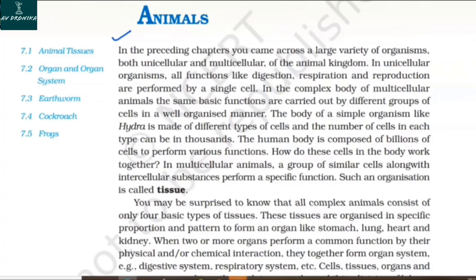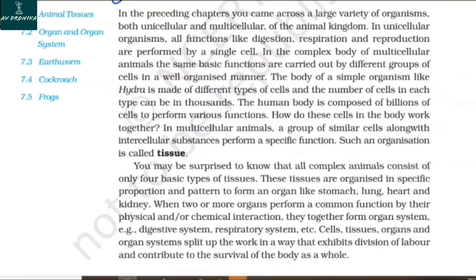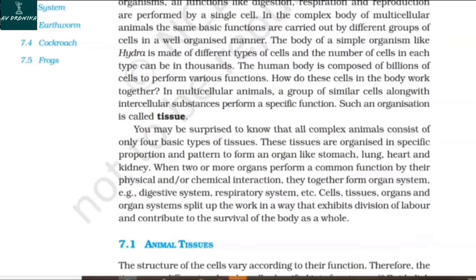The body of a simple organism like Hydra is made of different types of cells, and the number of cells in each type can be in thousands. The human body is composed of billions of cells to perform various functions. In multicellular animals, a group of similar cells along with intercellular substances perform a specific function. Such an organization is called tissue.